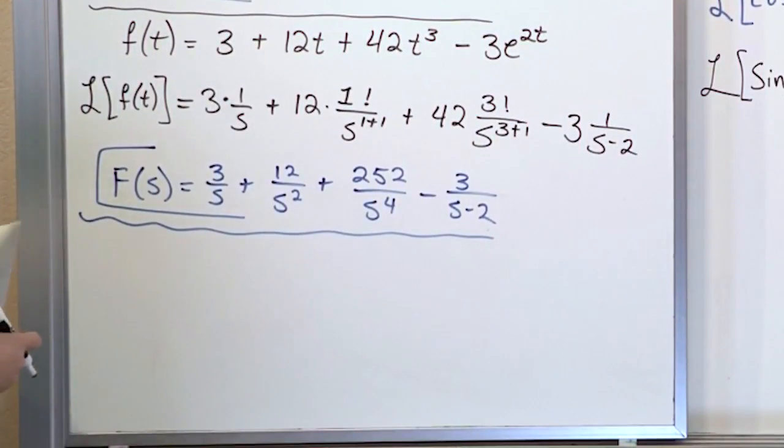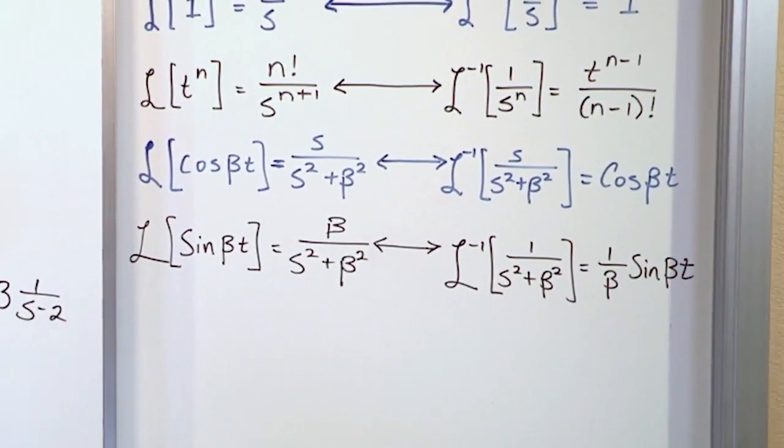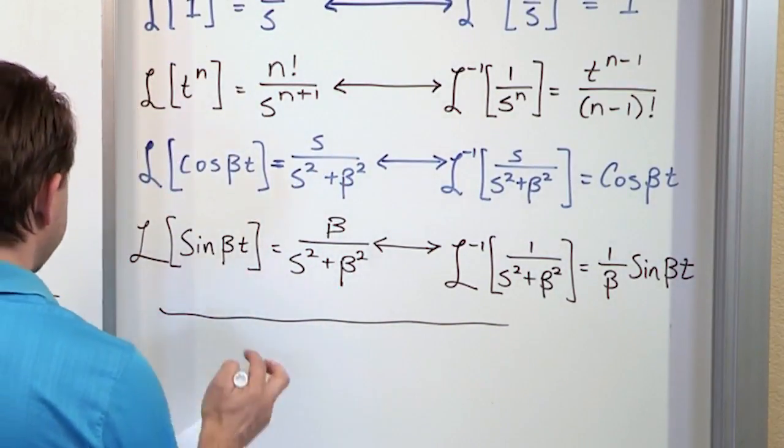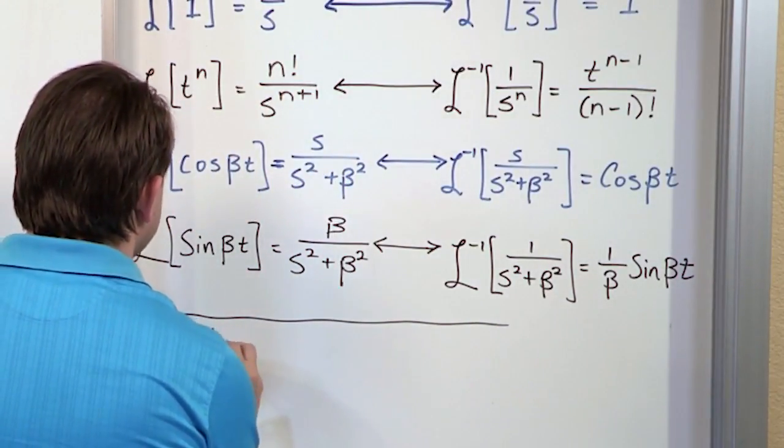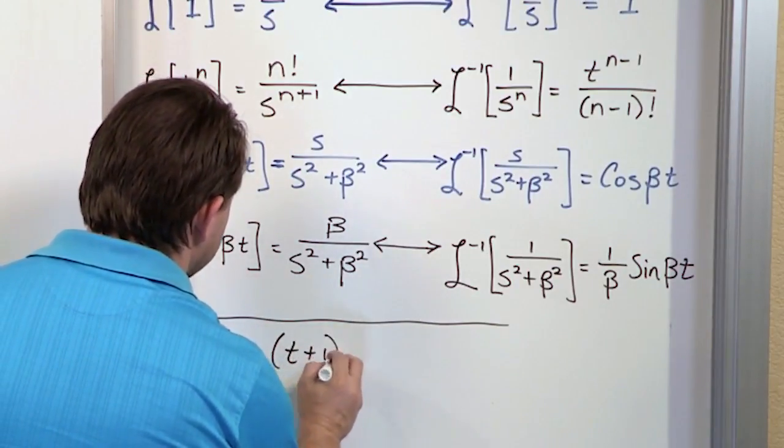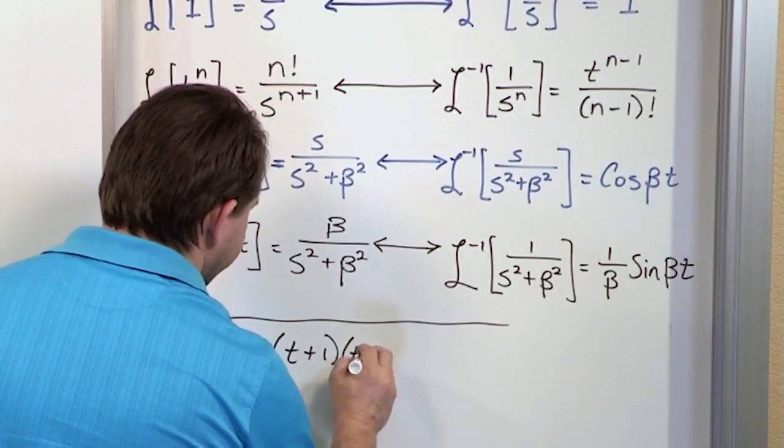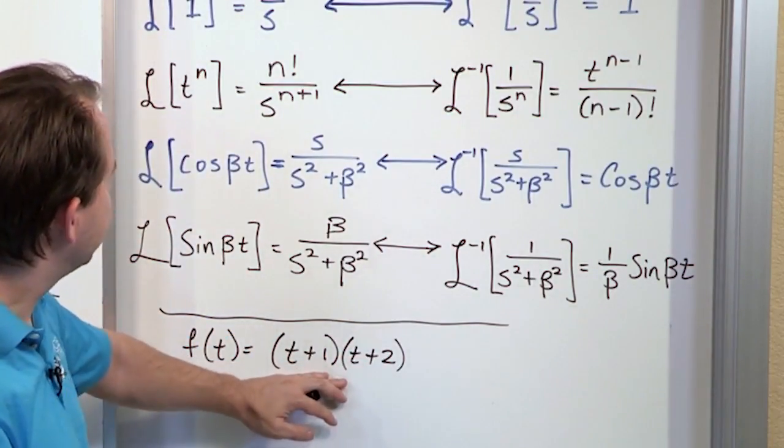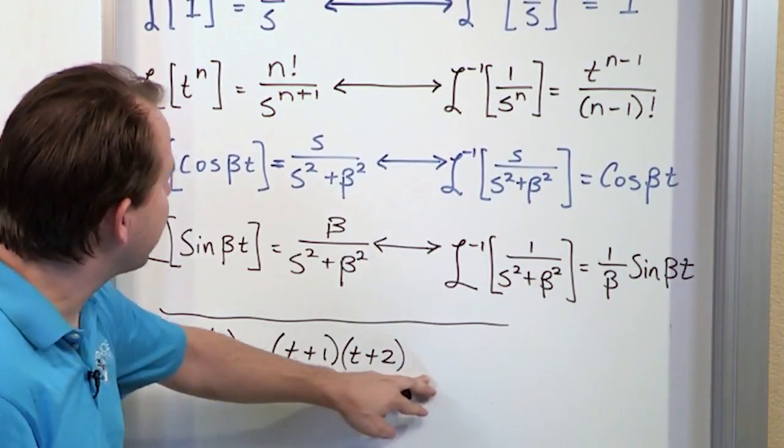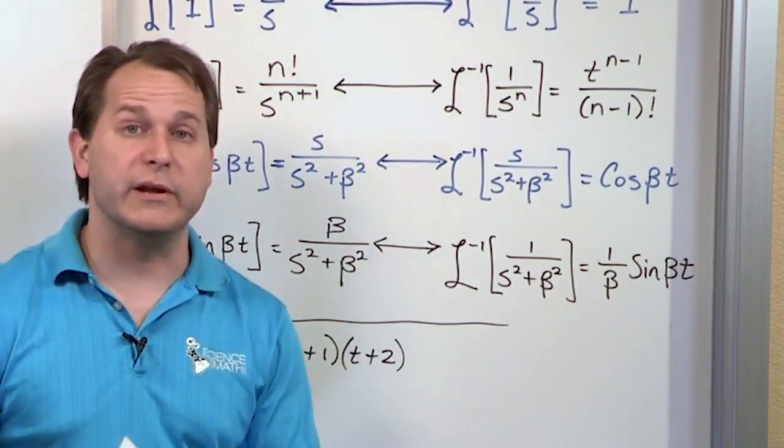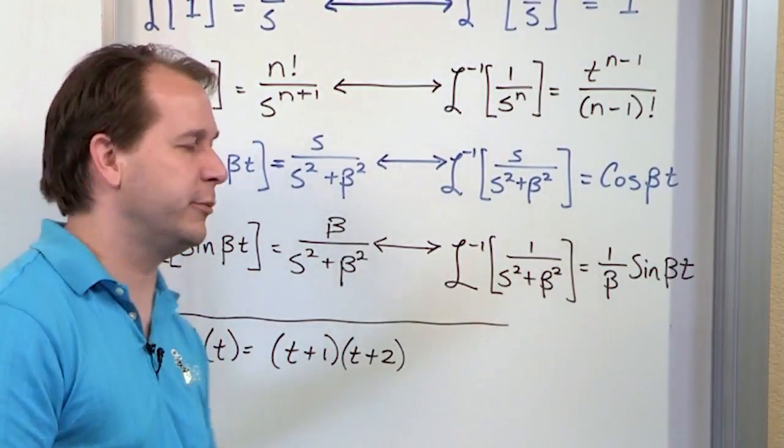We'll just do it here. F of t is equal to t plus 1 times t plus 2. So we don't know how to do Laplace transforms of products like this. But what we do know is we can expand this into a polynomial and we know how to handle all the terms in the polynomial. So let's do that.